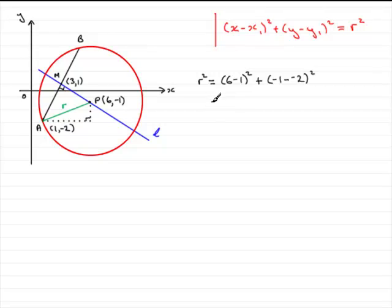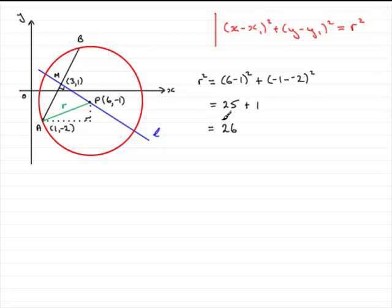So what have we got? Well, 6 take 1 is 5, so that length is 5 — 5 squared is 25. The difference in the y coordinates turns out to be 1 unit, and 1 unit squared is 1. So r squared equals 26. Obviously if I wanted r it would be the square root of 26, but since I want r squared I'll just leave it as 26.